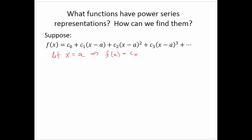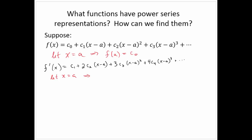Now let's apply a derivative. Differentiating the left-hand side gives f′(x). On the right-hand side, c₀ drops off. The derivative of (x−a) is 1, so we get c₁. The derivative of (x−a)² is 2(x−a), giving 2c₂(x−a). The next term is 3c₃(x−a)², then 4c₄(x−a)³, and so on. Letting x equal a again, all terms drop out except the first, so f′(a) = c₁.